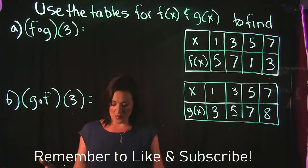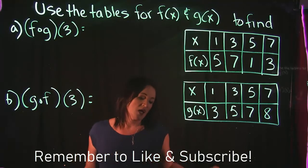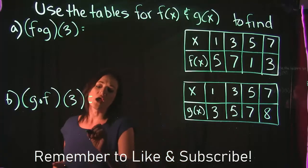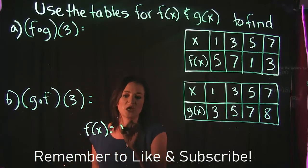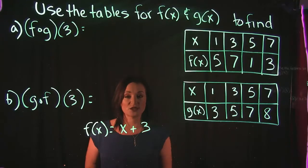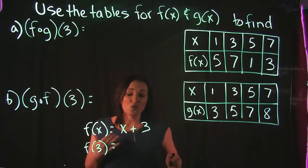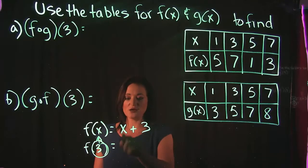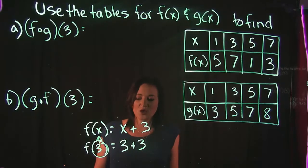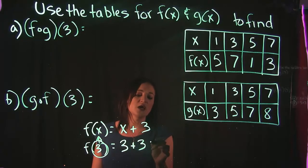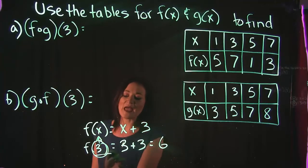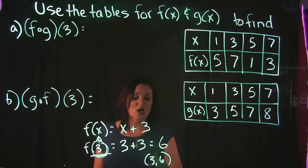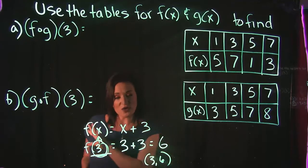Hopefully you are somewhat familiar with composition functions. I'm going to backtrack just a little bit to make sure we understand how to evaluate an input into a function. Most people have seen an equation in function notation. For example, f of x equals x plus 3. If I told you to find f of 3, that's telling you to take 3 and plug it in for x. So instead of x, I input 3, giving me 3 plus 3, which equals 6. This tells me that when x is 3, y is 6 — representing the point (3, 6).